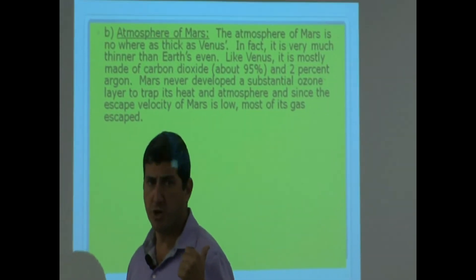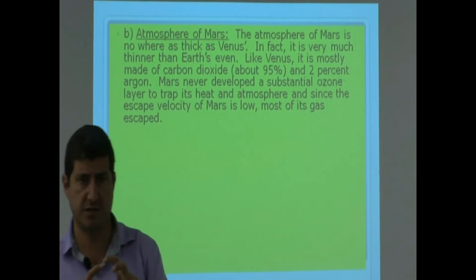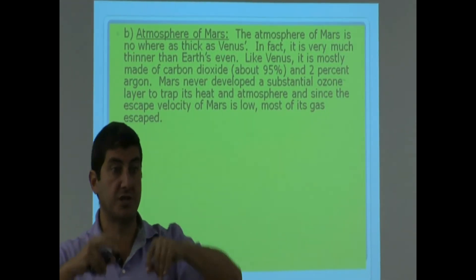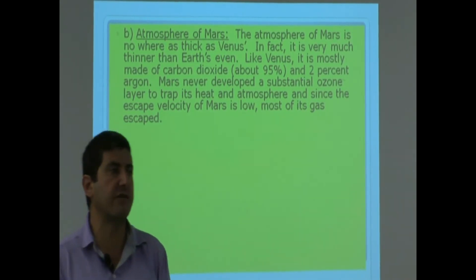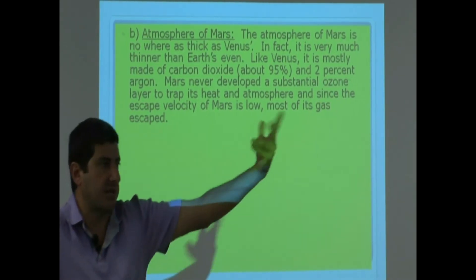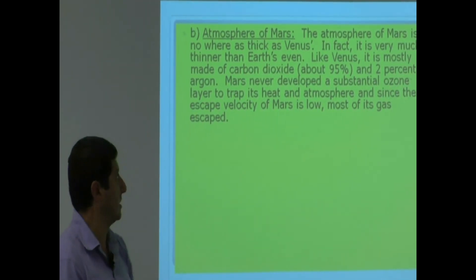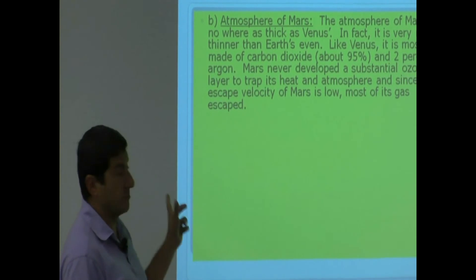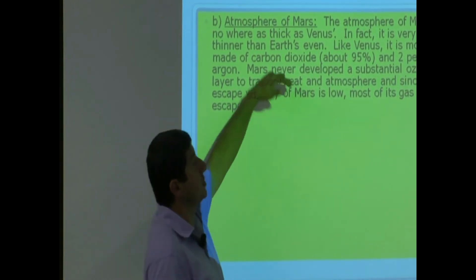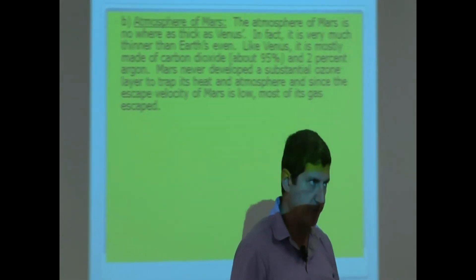Remember, Mars is much lighter than Venus. So its escape velocity is low. It's easy to escape from it. So that's why the atmosphere of Mars is thin. But in terms of makeup, it's very similar to Venus's atmosphere, which is carbon dioxide.